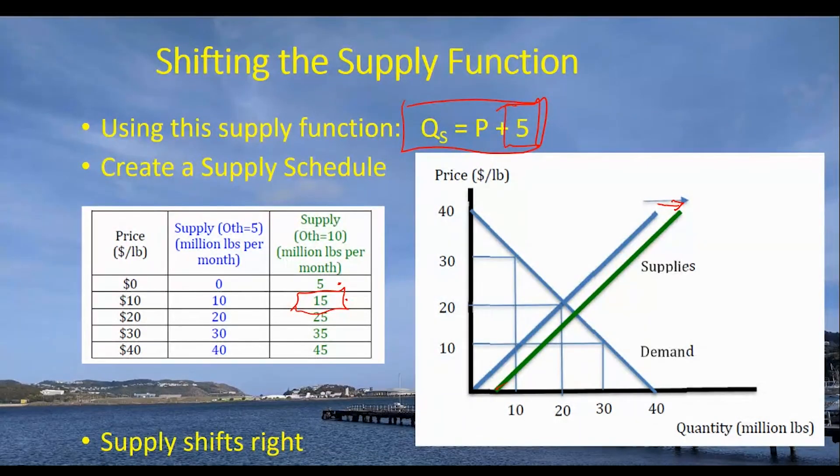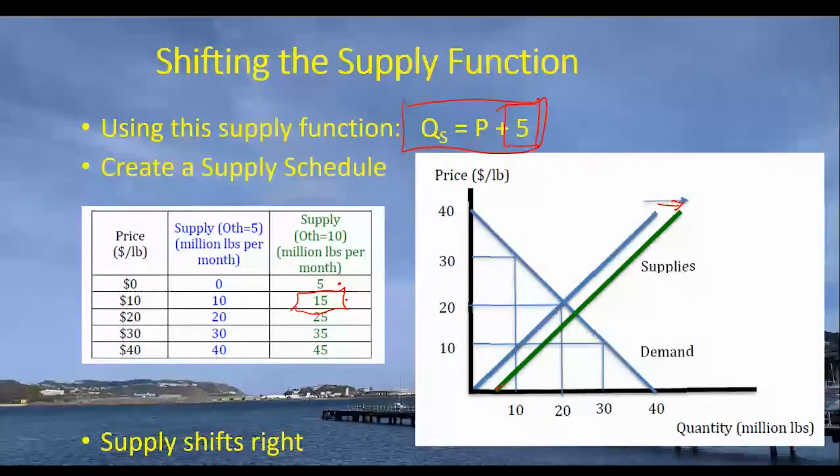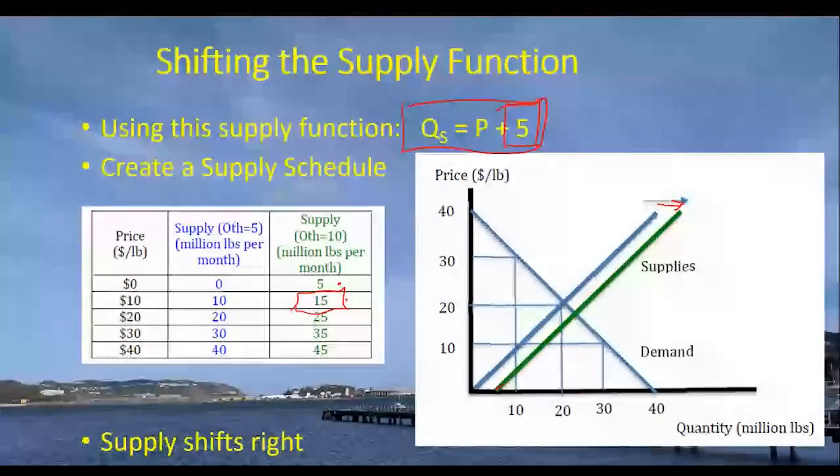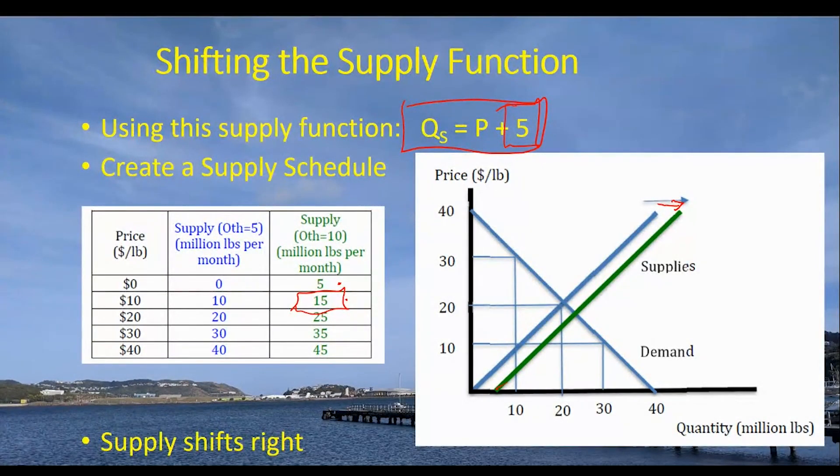And this is what's going on in the background then. When you change a particular variable like technology, it's going to cause a shift to the right or the left of that supply function. When you change number of sellers, it's going to shift right or left. If you change the future price, it's going to shift right or left in a particular market. But if you change the price of the product itself, you're just going to move up and down along the supply function itself. And you'll tell the story in that particular way.